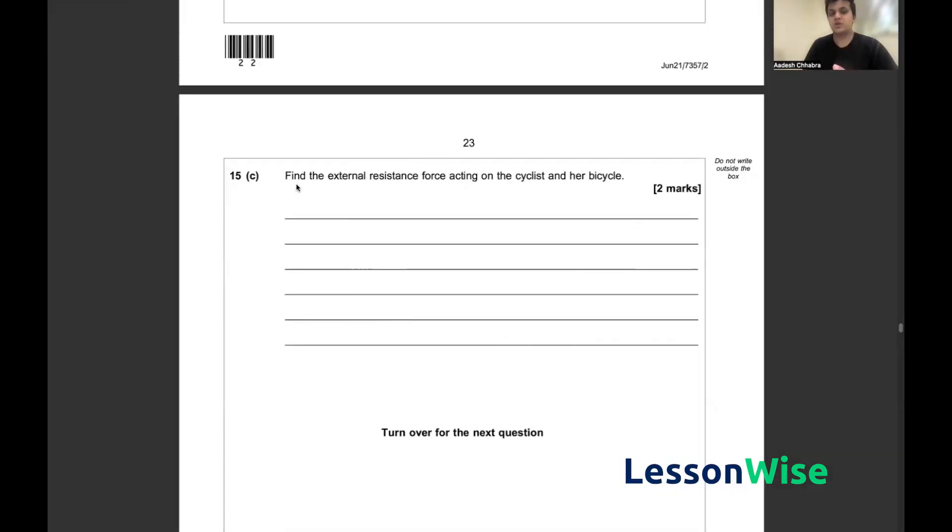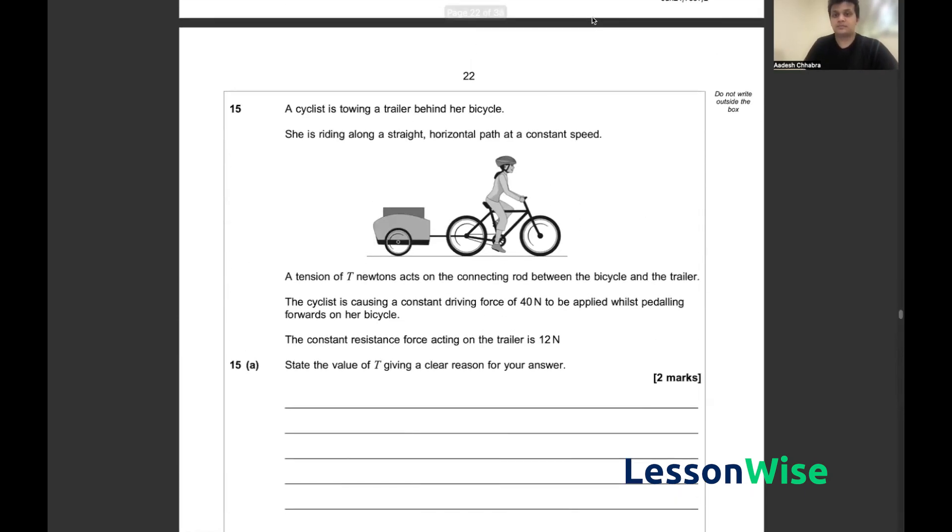For question 15(c), we have to find the external resistance force acting on the cyclist and her bicycle. We have found in previous parts that the tension force is equal to 12 newtons. With respect to the trailer, the tension force acts this way, but with respect to the cyclist and bicycle, the tension force is acting away from her, equal to 12 newtons. We also know that there is a driving force of 40 newtons on the bicyclist.